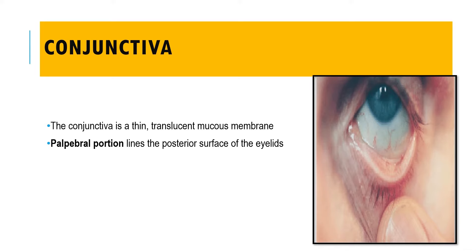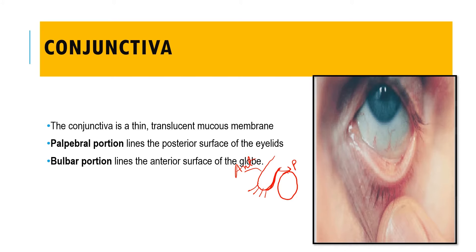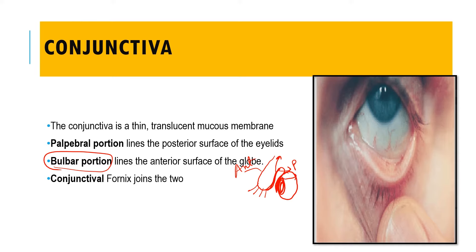There is a palpebral portion which is lining the posterior surface of the eyelid. So if this is your eyelid, this is the anterior surface and this is the posterior surface which is closer to the eyeball. The conjunctiva lining the posterior surface of the eyelid is called the palpebral portion, and the conjunctiva lining the anterior surface of your eyeball is called the bulbar portion. The part of conjunctiva connecting the two is called the fornicial conjunctiva — the palpebral, bulbar, and fornicial conjunctiva.